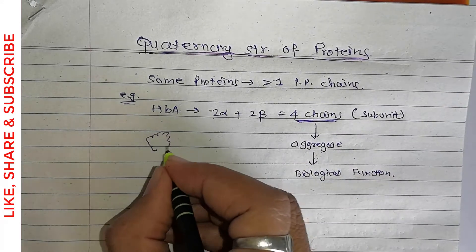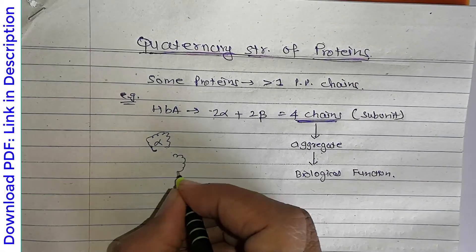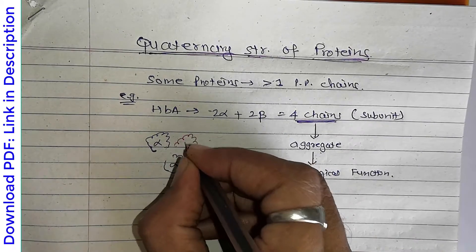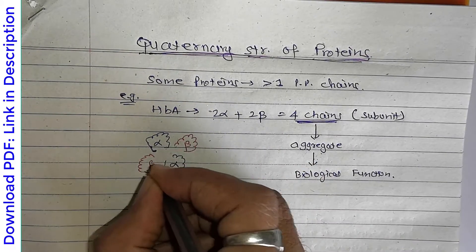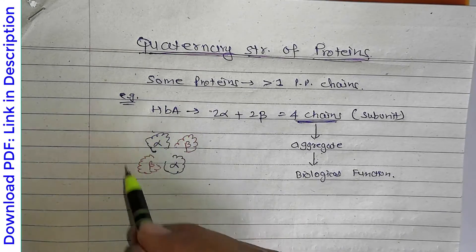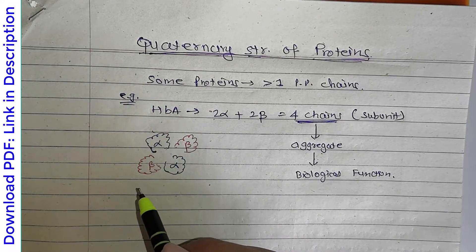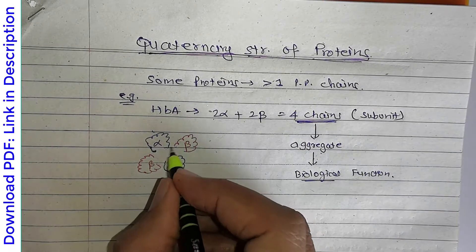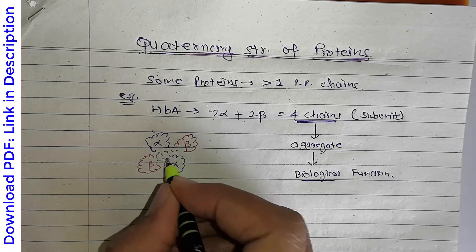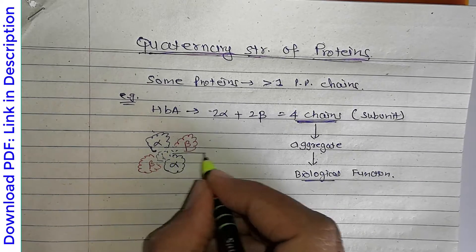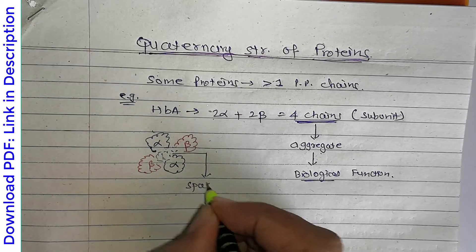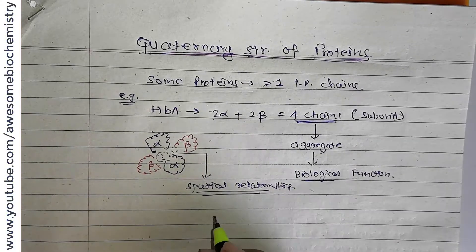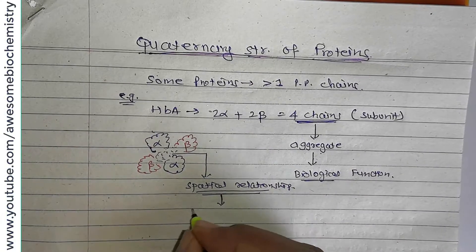Diagrammatically, suppose this is one alpha chain, this is the second alpha chain, then this is one beta chain and this is the second beta chain. All four chains aggregate together and carry out their biological function. Once they aggregate, there must be some kind of spatial relationship between all four chains. This spatial relationship is known as quaternary structure.